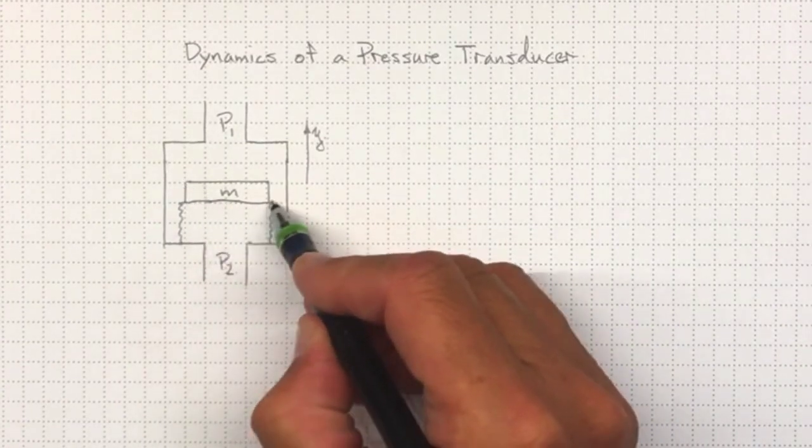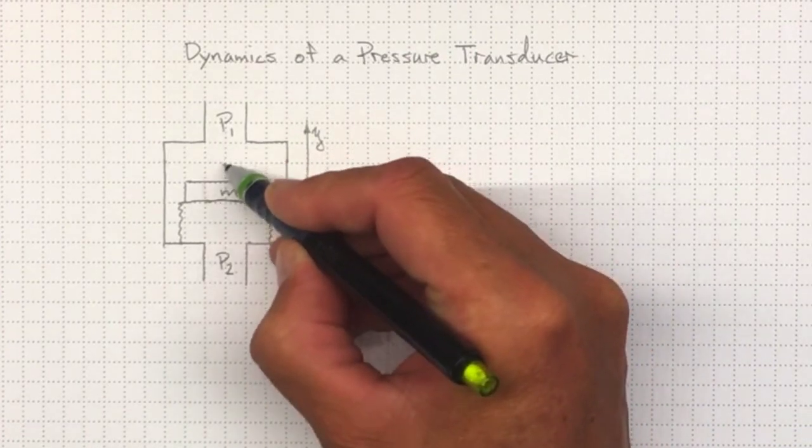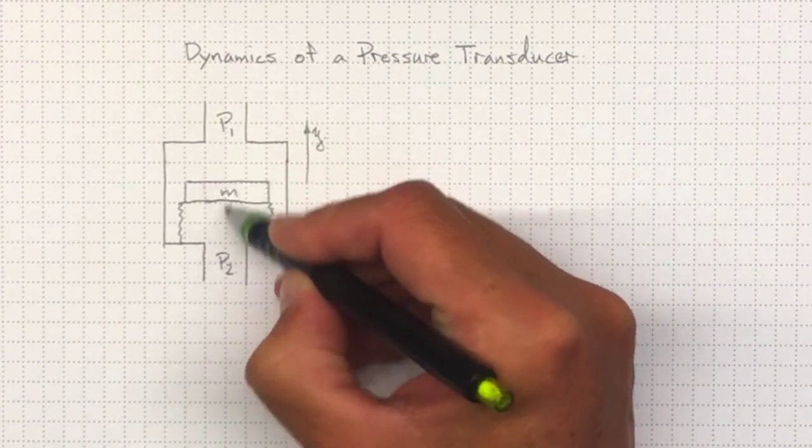In the middle, we'll have a diaphragm here that's got some mass, and depending on the pressure difference between this side and that side, this diaphragm will move.